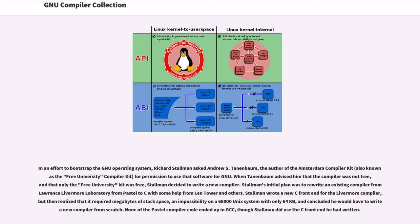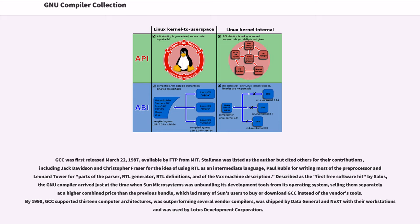None of the Pastel compiler code ended up in GCC, though Stallman did use the C front end he had written. GCC was first released March 22, 1987, available by FTP from MIT. Stallman was listed as the author but cited others for their contributions, including Jack Davidson and Christopher Fraser for the idea of using RTL as an intermediate language, Paul Rubin for writing most of the preprocessor, and Leonard Tower for parts of the parser, RTL generator, RTL definitions, and of the VAX machine description.